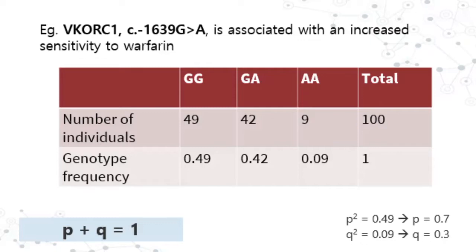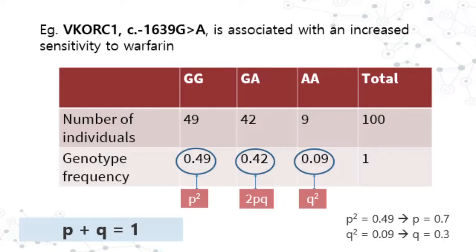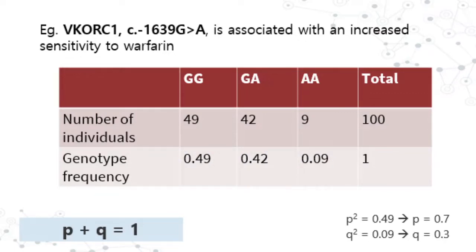The genotype frequency for GG (homozygous wild type) is 0.49, heterozygous is 0.42, and homozygous variant is 0.09. So 0.49 is p-squared, meaning p equals 0.7. And q-squared is 0.09, so q equals 0.3. Adding p plus q gives 1, confirming the equation.